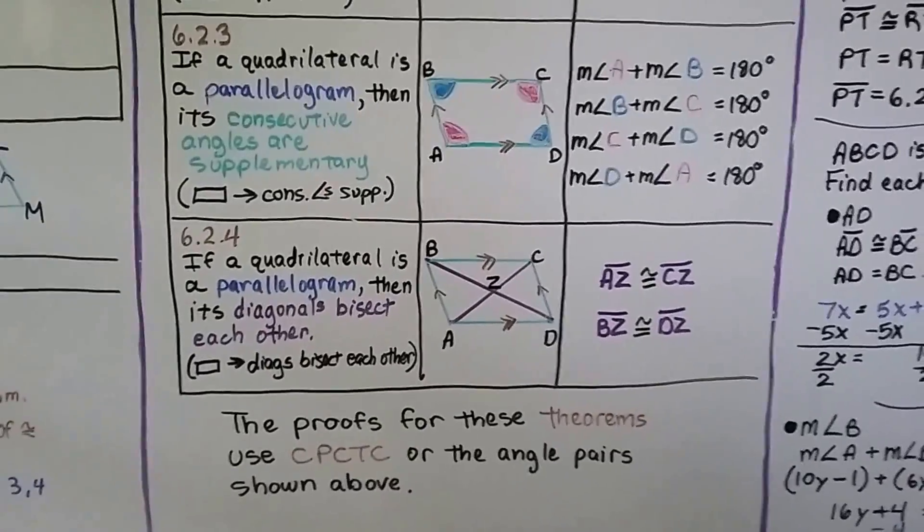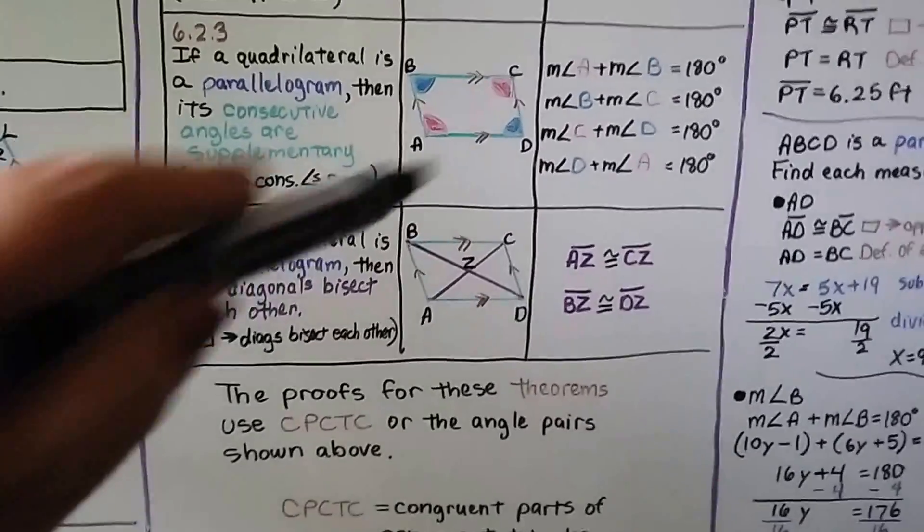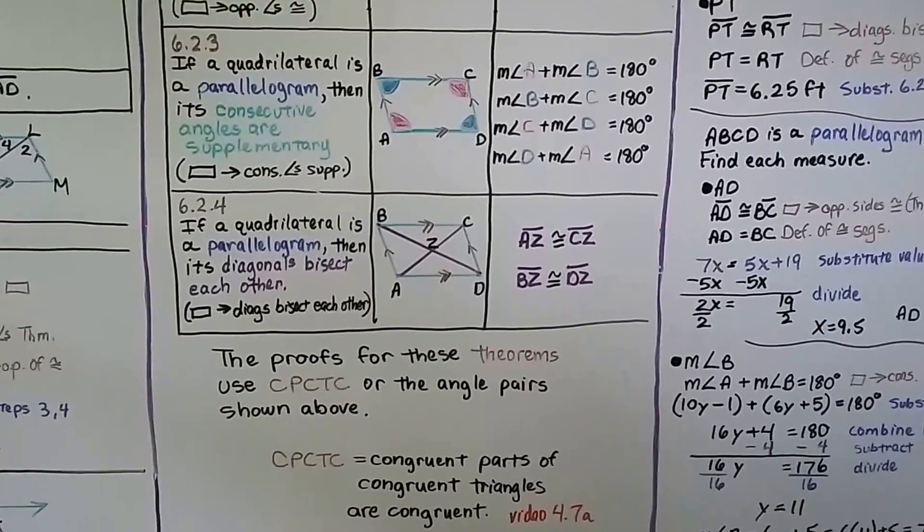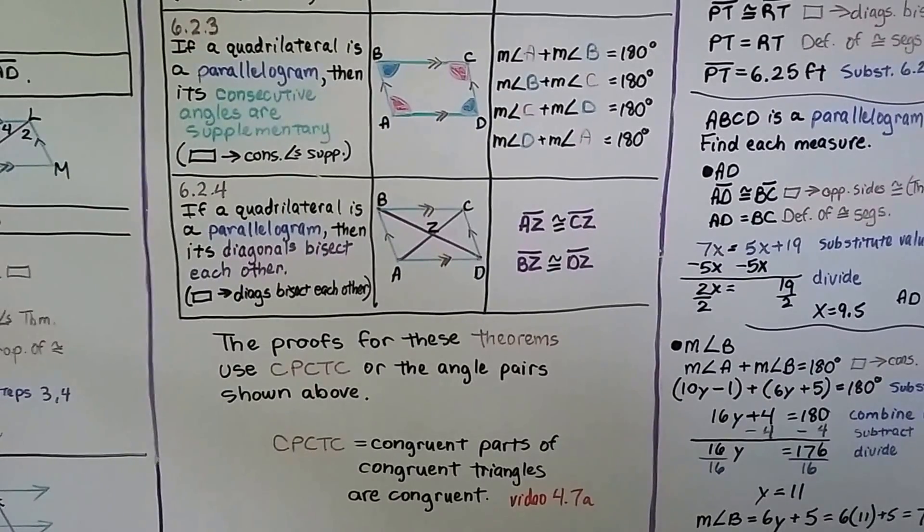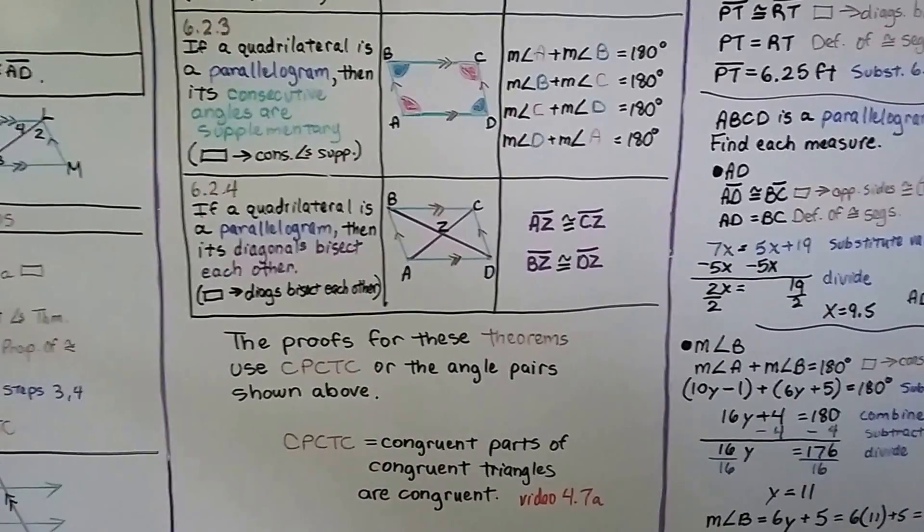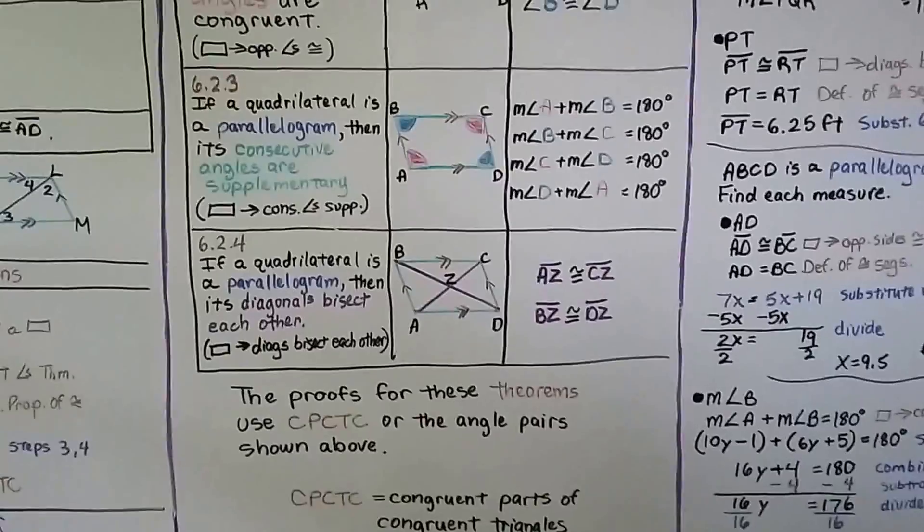And the proofs for these theorems use CPCTC or the angle pairs that are shown. And if you don't remember, CPCTC is congruent parts of congruent triangles are congruent. And if you missed that, you need to go back to 4.7a and watch that when you have a chance, because it's really important. We're going to use that in proofs.